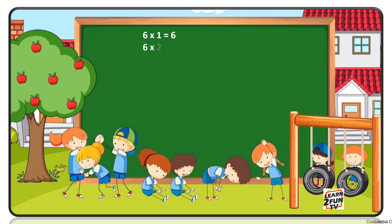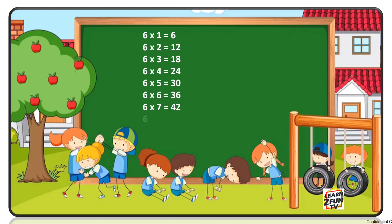6 ones are 6. 6 twos are 12. 6 threes are 18. 6 fours are 24. 6 fives are 30. 6 sixes are 36. 6 sevens are 42. 6 eights are 48. 6 nines are 54. 6 tens are 60.